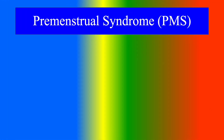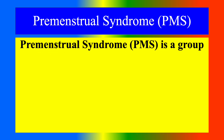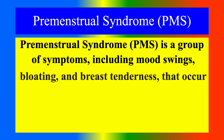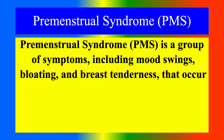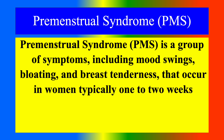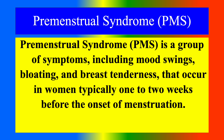What is Premenstrual Syndrome? It is a group of symptoms including mood swings, bloating and breast tenderness that occur in women typically 1 to 2 weeks before the onset of menstruation.